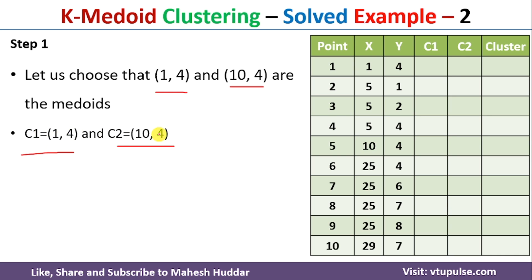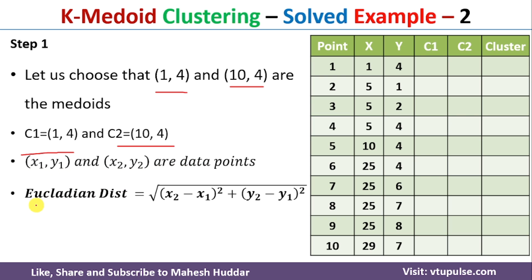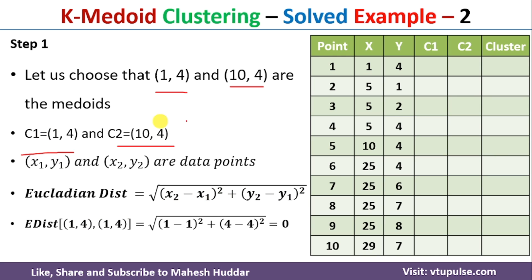Once we select two medoids, we need to find the distance from these medoids to each of the data points using Euclidean distance. If (x1, y1) and (x2, y2) are two data points, the Euclidean distance is: square root of (x2−x1)² + (y2−y1)². The distance from medoid (1,4) to the first data point (1,4) is 0.